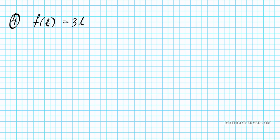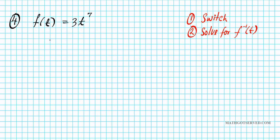Let's take a look at problem number four. What if we have the function f of t equals 3t raised to the seventh power? To find the inverse we'll follow our steps: step one is the switch — the input with the inverse and the output with the input — and step two is to solve for the inverse, f to the negative one of t. So f of t, the output, becomes the input t, and 3t, the input, becomes f to the negative one of t, raised to the seventh power.